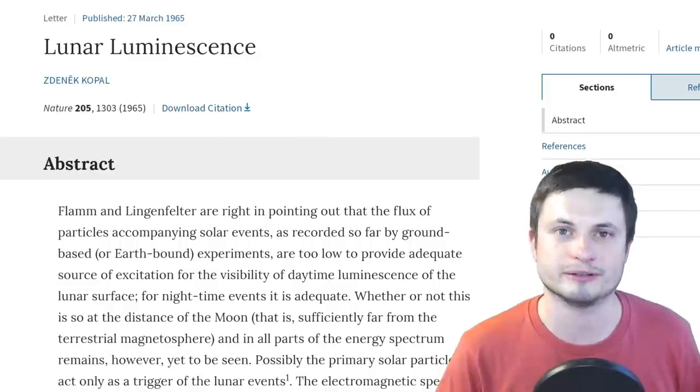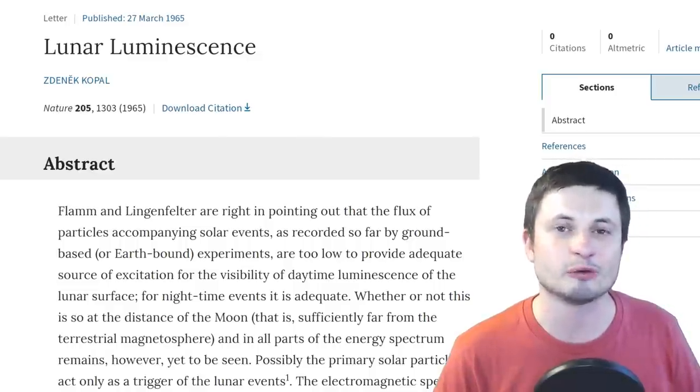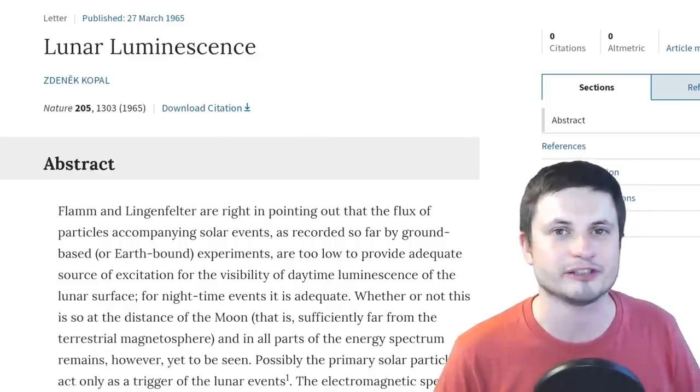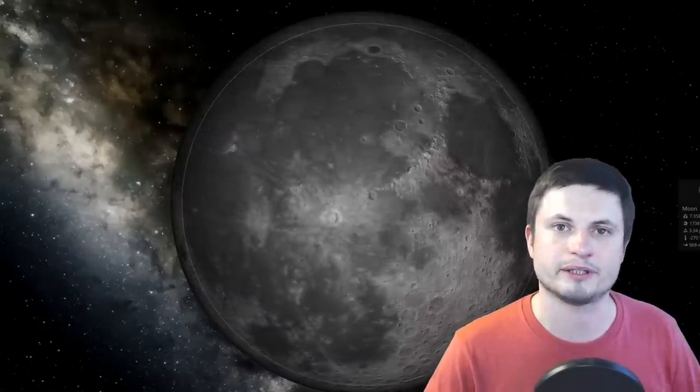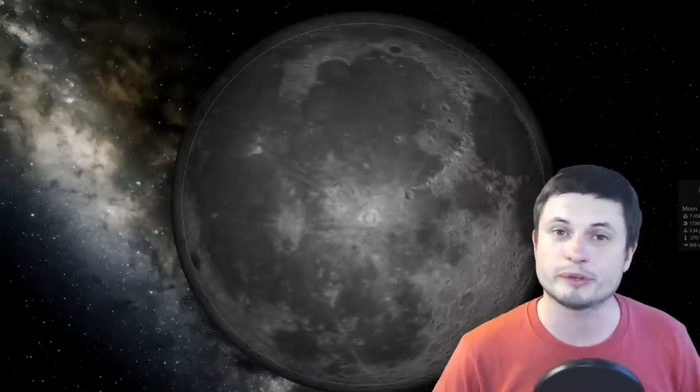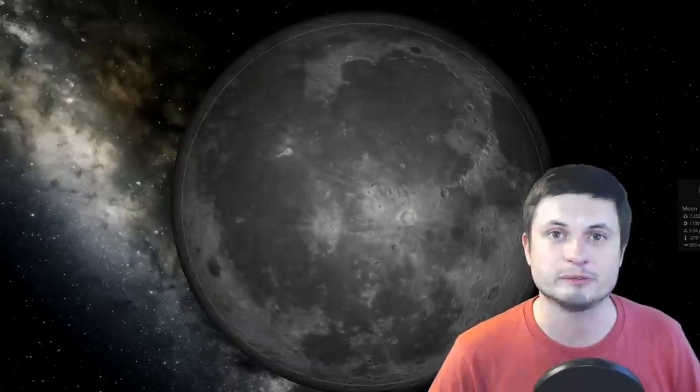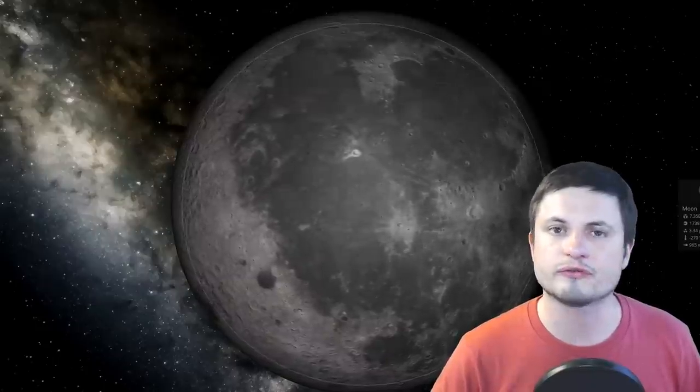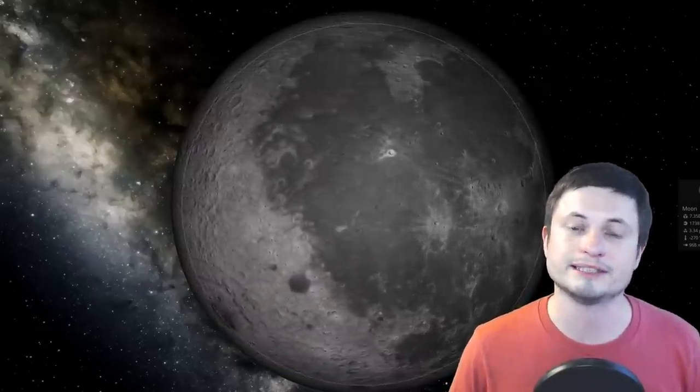I mean even William Herschel back in the 1700s was able to see and describe these events but we just don't know what they are. The two documents I posted in description have hundreds of these documented events. And for the most part none of them have a lot of similarities but they do have similar locations for some reason. And so for this reason there were at least a few explanations to what could be happening on the surface of the moon that's causing these.